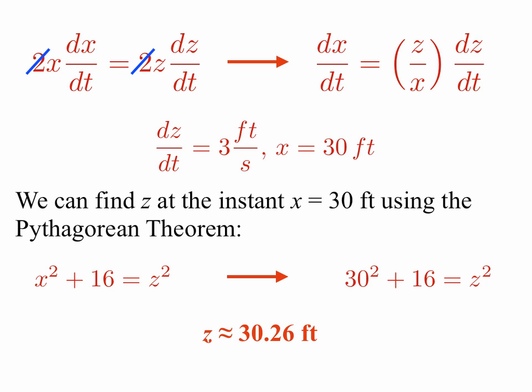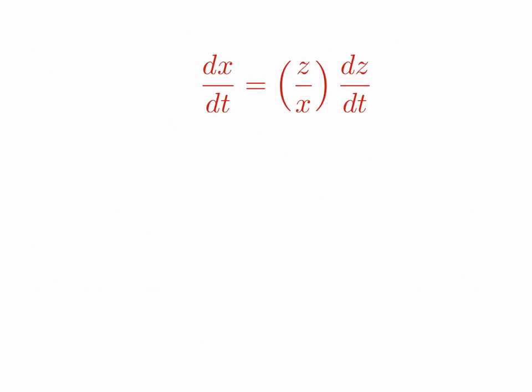So now if you go back up to the top right-hand corner of the slide, you see that dx/dt is equal to (z/x) dz/dt, as we mentioned before. And now we have all of the information. We know that z is 30.26 feet, we know that x is 30 feet, and we know that dz/dt is 3 feet per second. So now we're ready to plug that information in.